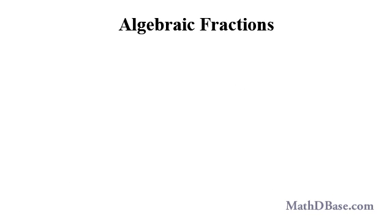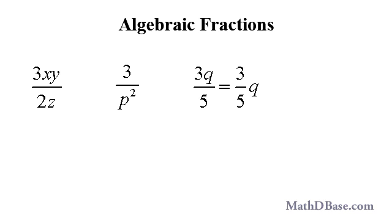Algebraic fractions have variables in the numerator or in the denominator, or both. 3xy over 2z, 3 over p squared, 3q over 5, which is the same as 3 over 5 times q, and w are all algebraic fractions. The last because any variable or number, w in this case, can be written as an improper fraction with denominator 1.